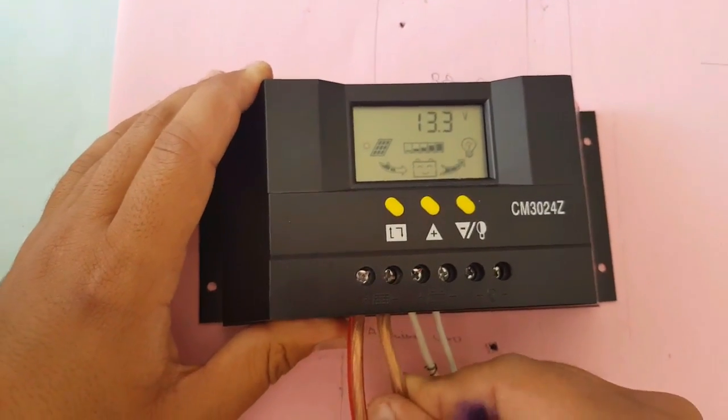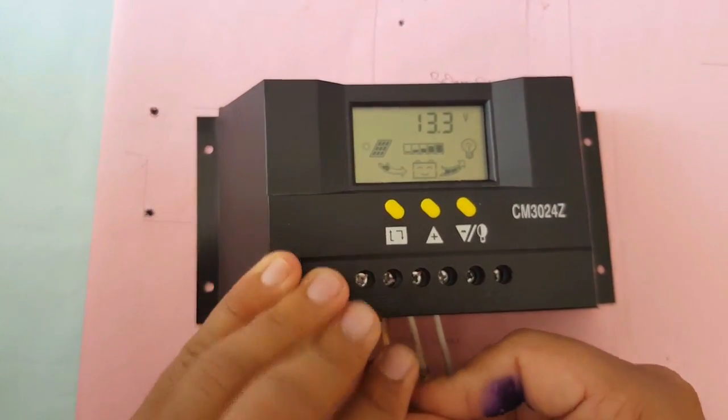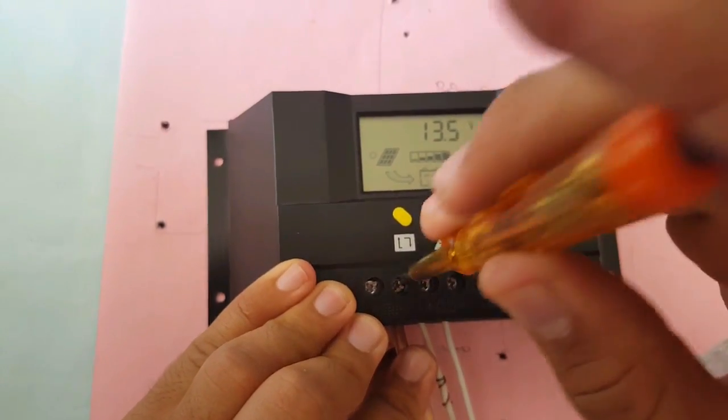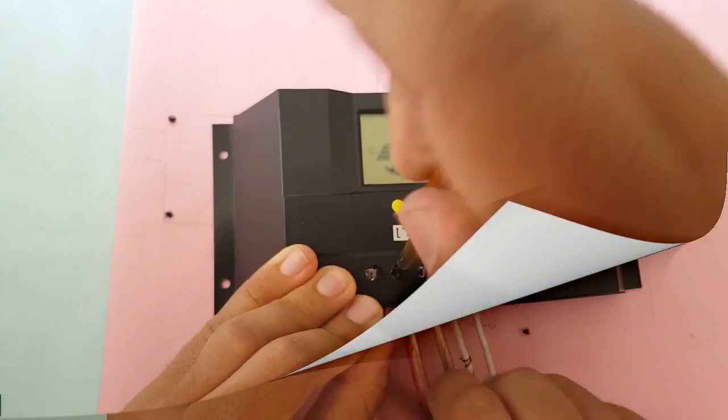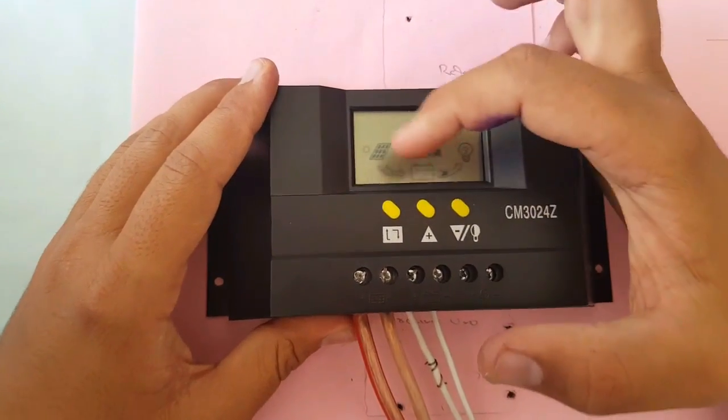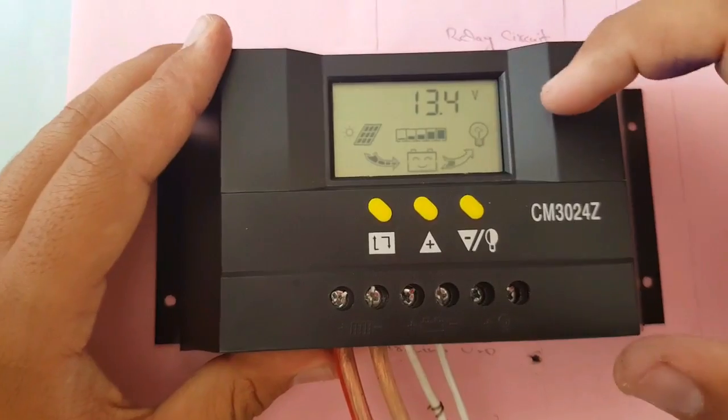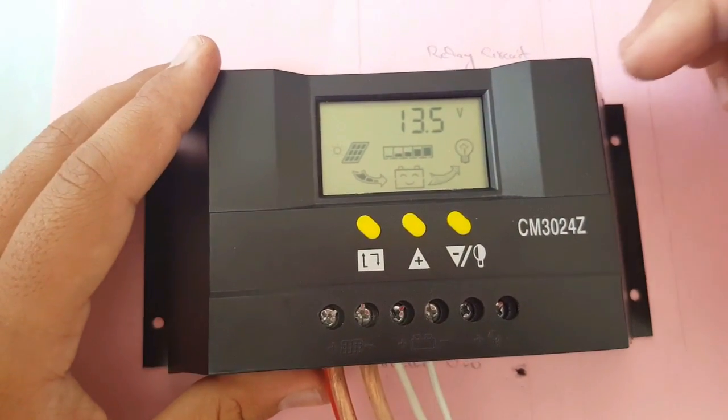Connect the solar panel positive wire to the positive points on the charge controller and negative wire to the negative points on the charge controller. After successful connection, you will see arrow blinking on the display from the panel toward the battery. Arrow blinking represents the power.